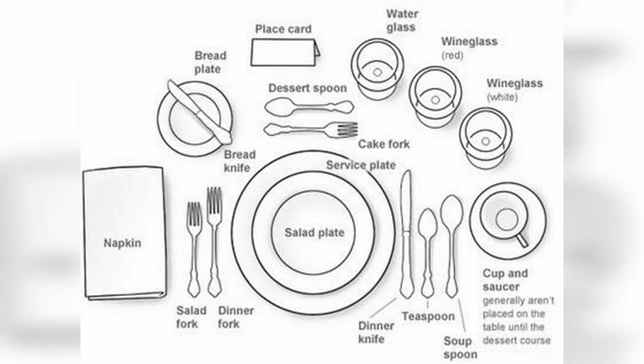The cutlery has been placed in a specific manner. Always remember that the spoon and the knife are placed on the right hand side, and the forks are on the left hand side. You always have to remember: knife and spoon on the right, fork on the left.